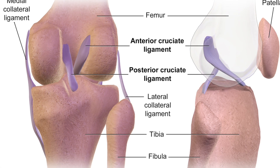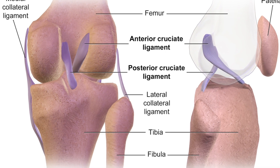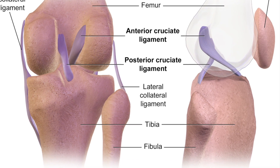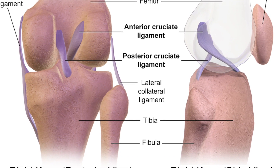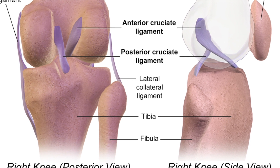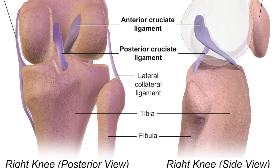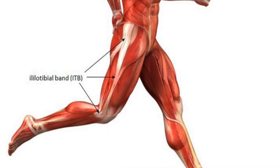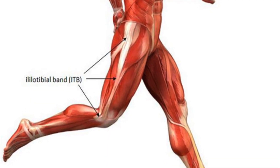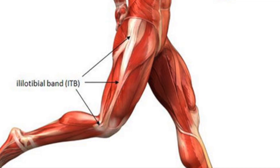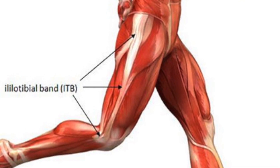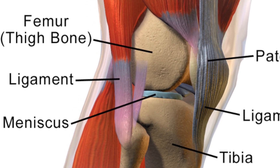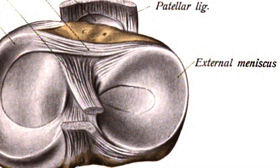Ligaments are strong structures inside and around the knee that provide stability. Both the inside and the outside, as well as right through the center, strong ligaments control the motion of the knee and prevent the knee from collapsing. Running along the outside of the thigh and attaching below the knee joint line is the iliotibial band, another very strong, stabilizing structure.